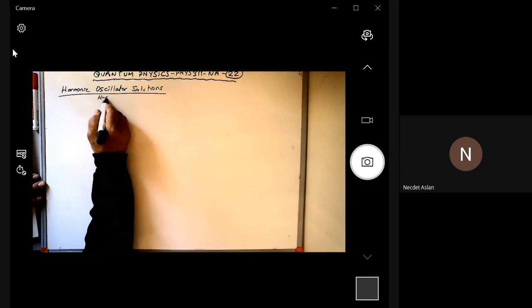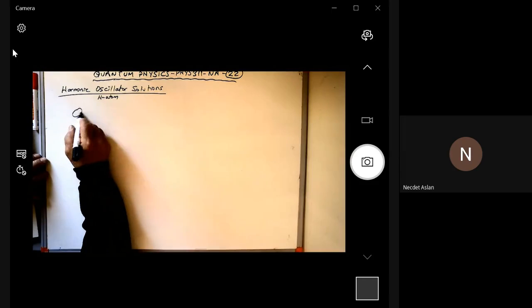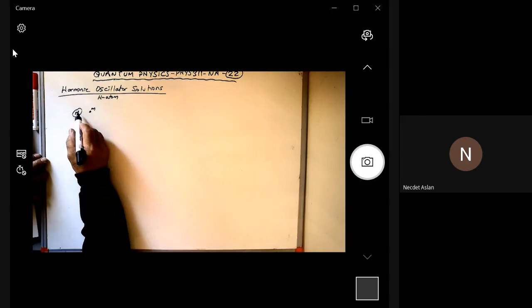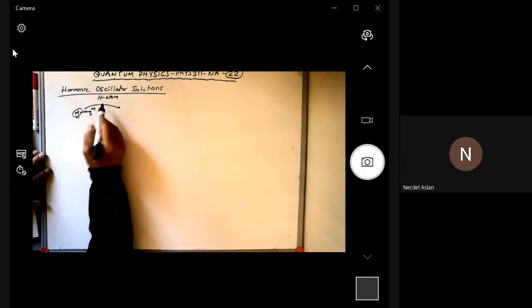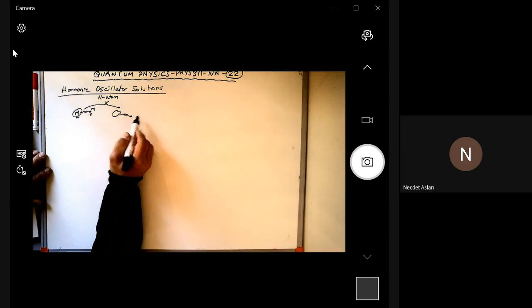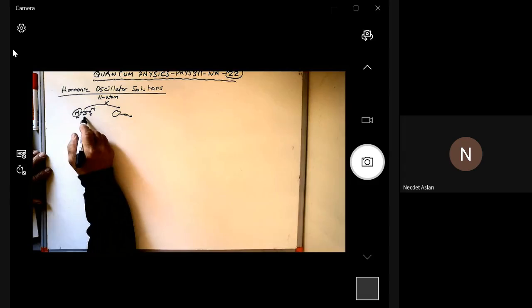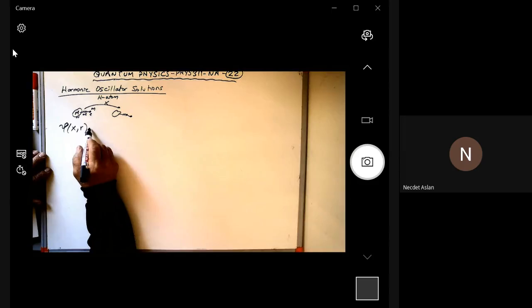We will consider the hydrogen atom. Now we have two particles instead of just one. We assume that the quantum mechanical particles are the nucleus and electron, for instance, and they have masses. Small m is the electron mass and capital M is the mass of the nucleus. We assume that these two somehow oscillate and also move together. The time-independent solution is a function of two variables right now.